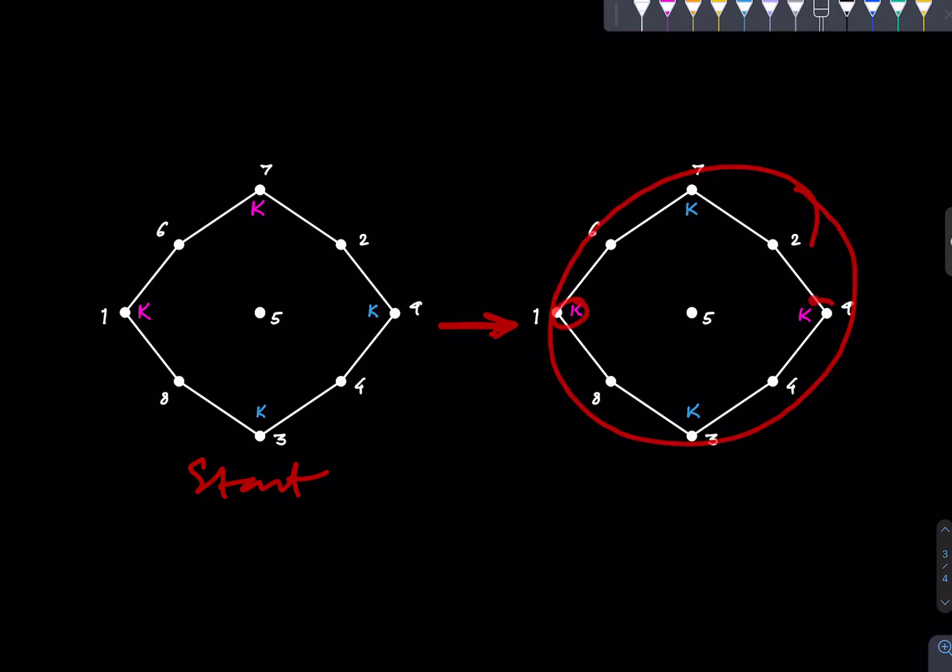We want to ask: can we get to the final position, which corresponds to red knights at 1 and 9, and blue knights at 3 and 7? Now it is clear that one cannot, because this ordering will be preserved no matter how you move.